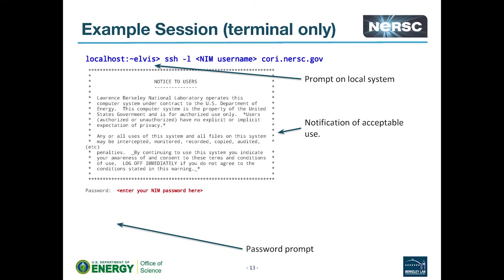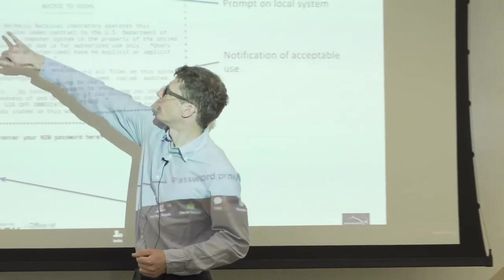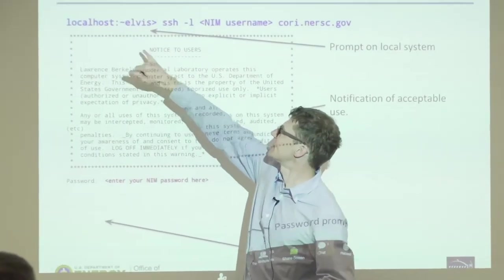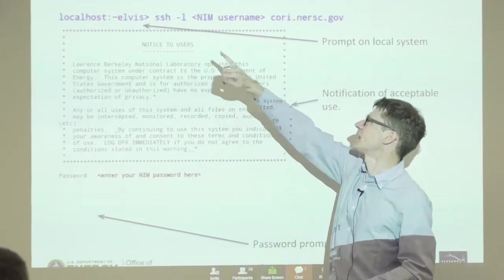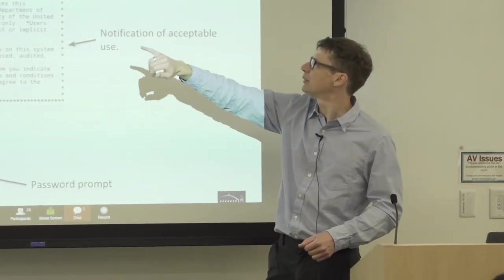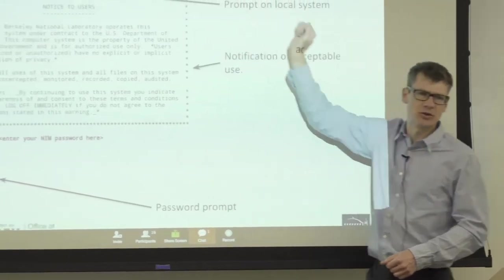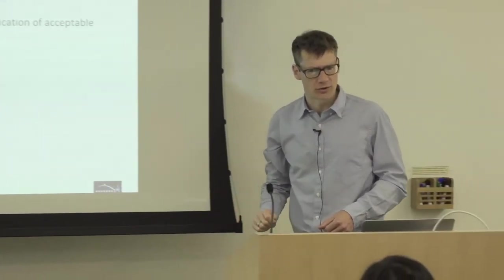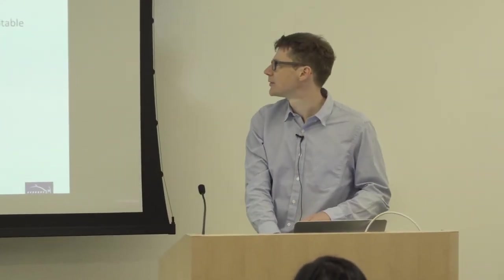So just kind of an example of what it looks like when you're logging in. This is just using a simple terminal session. So if you're using terminal or PuTTY. From your terminal, you'll have a prompt something like this. Our username here is Elvis. ssh -l and then your username, NIM username. And then the name of the system that you want to log into cori.nersc.gov or edison.nersc.gov, et cetera.